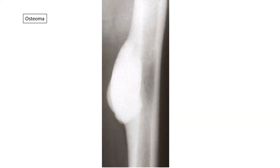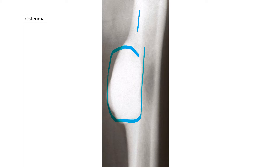This is an osteoma at a somewhat uncommon location — in one of the long bones. You'll notice it has the same density as the cortical bone; in fact, it's probably a little more dense. And again it has that stuck-on appearance, so it's a surface lesion. By definition, an osteoma needs to be on the surface.